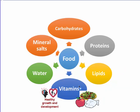The fourth group is vitamins. We can find them in fruits, vegetables, and some types of fish. Vitamins have many types. In general, all vitamins are important for healthy growth and development — healthy growth away from diseases and illness. Vitamins are very important to our health.